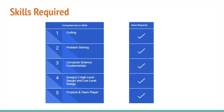Let's discuss the skills required and how SDE2s are evaluated. First is coding — a must-have skill; candidates should be strong in any programming language such as C, C++, or Java. Problem-solving ability is very important. Computer science fundamentals are also a must. Design has two components: high-level design and low-level design — low-level design is very important while high-level design is good to have. Finally, projects and being a team player are evaluated: what are your key contributions, what projects did you work on, and how did you work as a team.